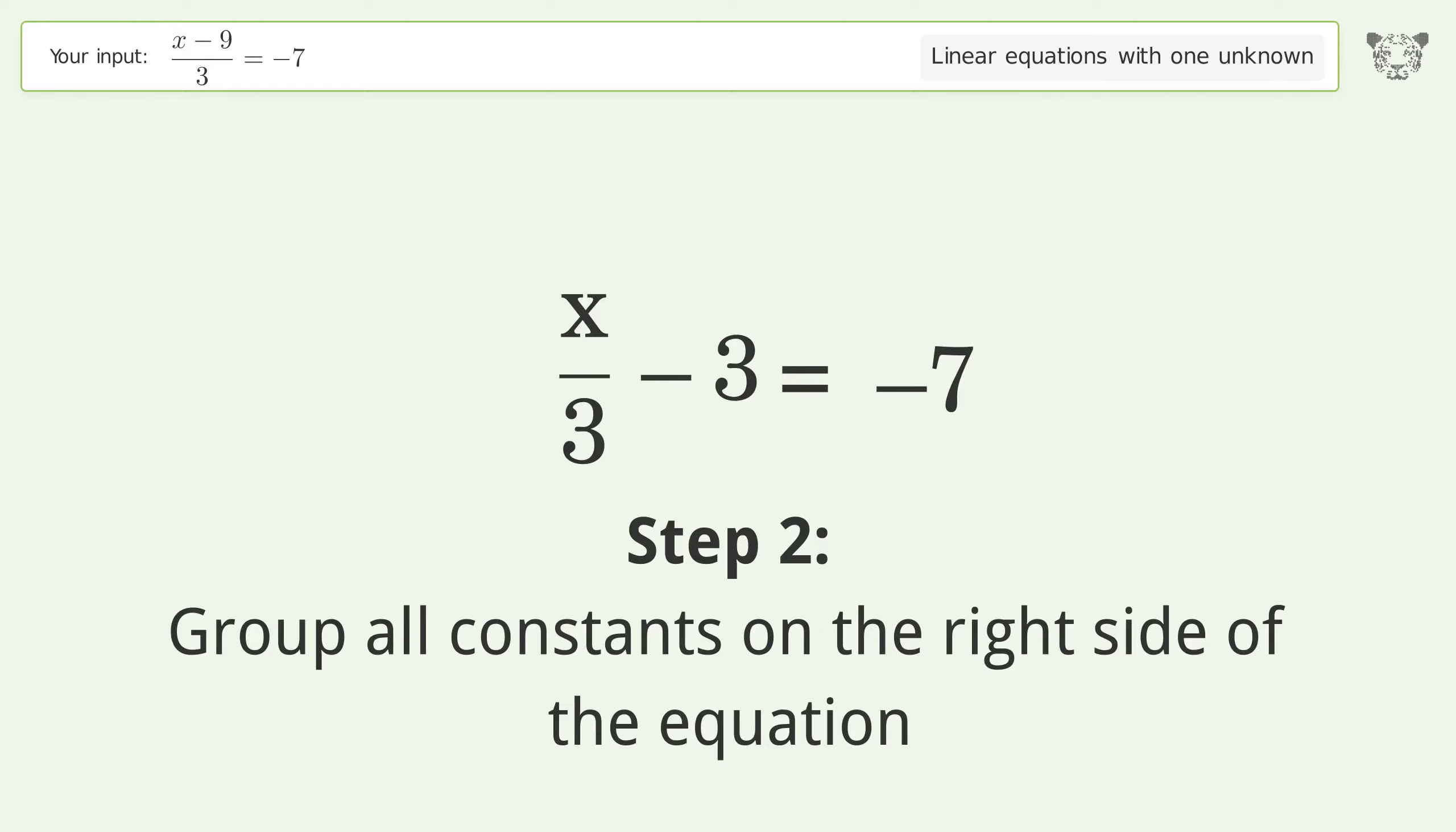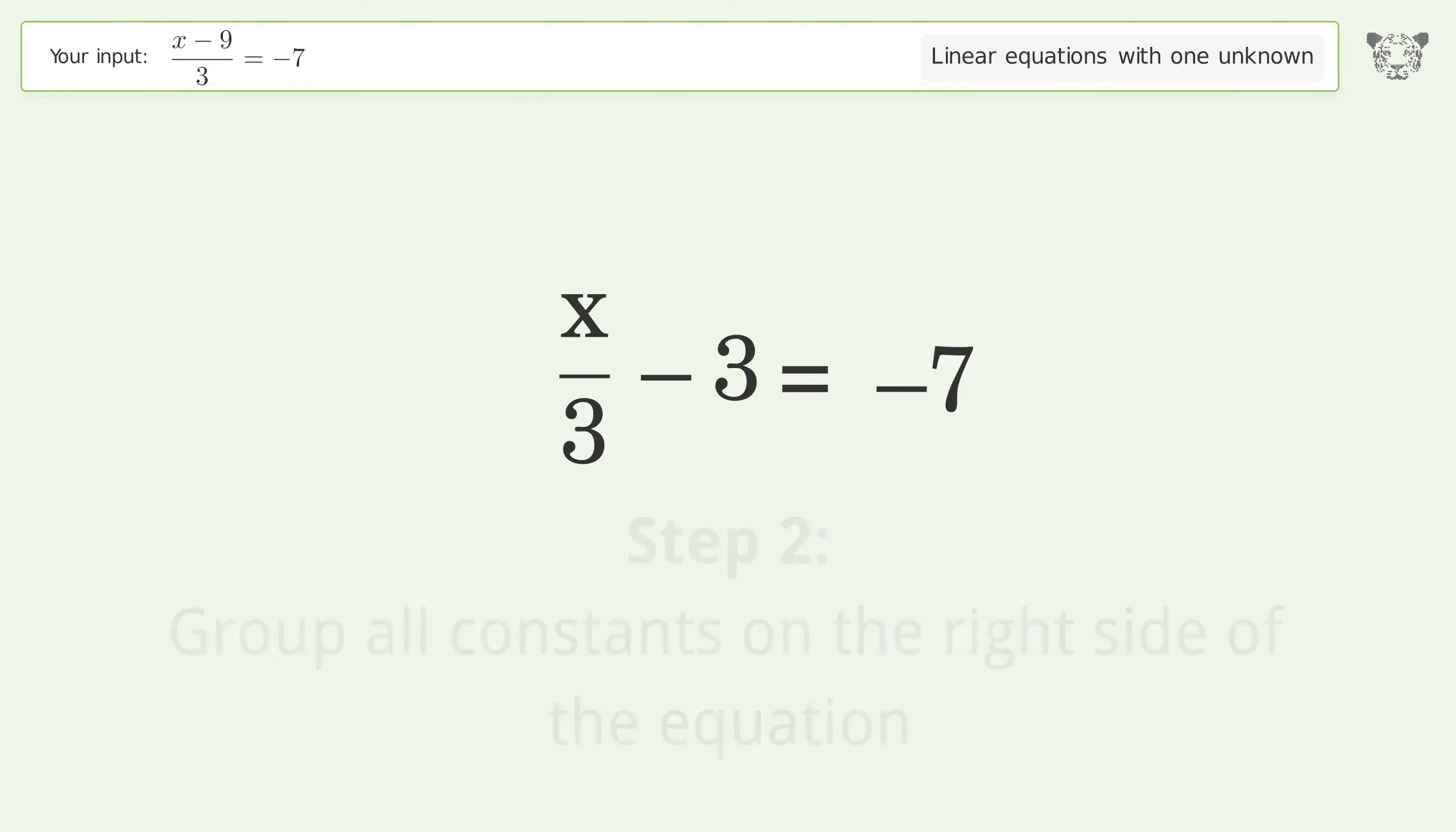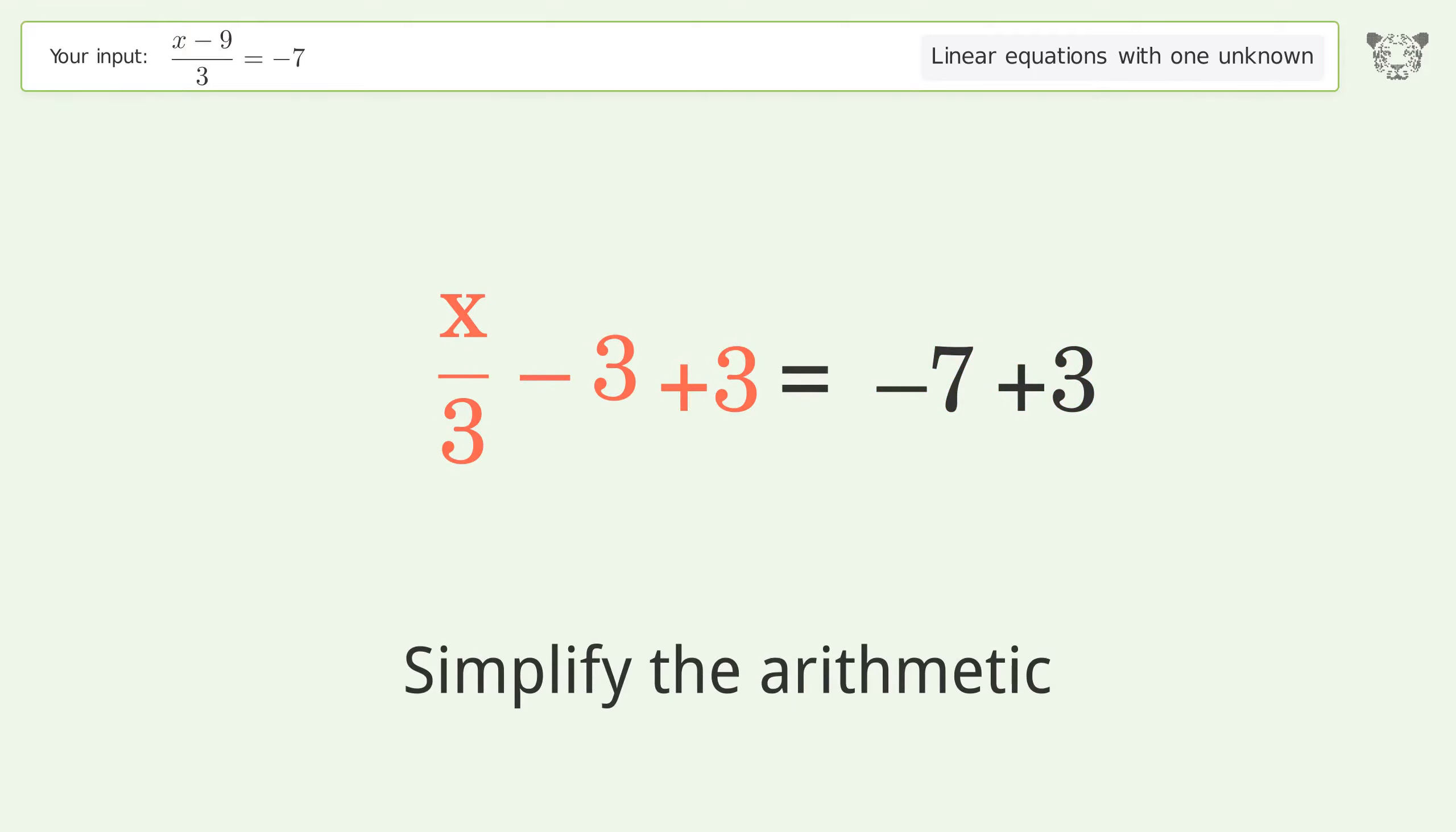Group all constants on the right side of the equation. Add 3 to both sides. Simplify the arithmetic.